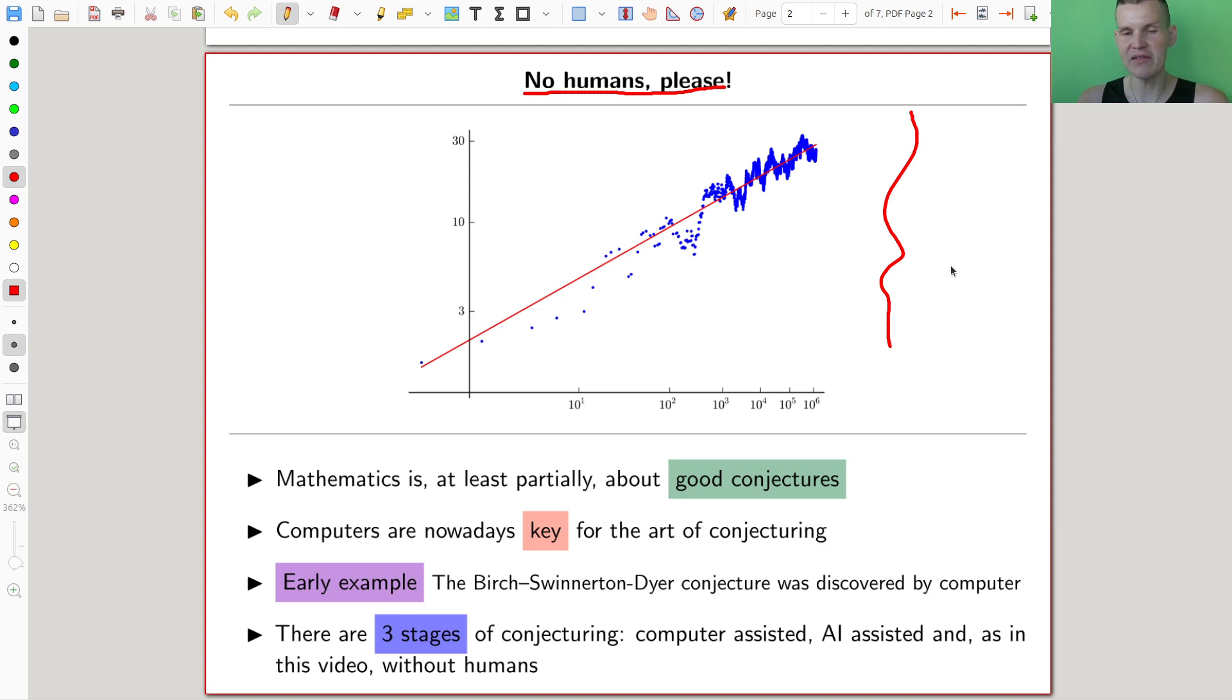But what I want to have in mind for this type of video is kind of what I call the three stages of conjecturing. The one we see above here, the kind of most of it, like 99% of all conjecturing when you have a computer, is computer-assisted conjecturing. So you run a computer to make some calculations, make some nice plots or something.